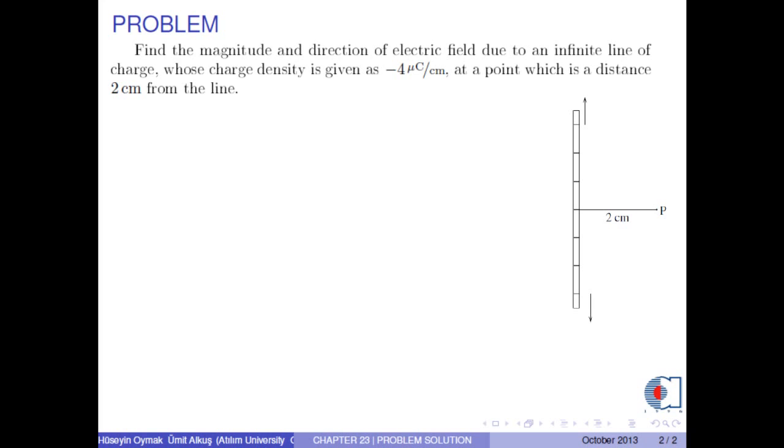Find the magnitude and direction of electric field due to an infinite line of charge whose charge density is given as negative 4 microcolons per centimeter at a point which is a distance 2 centimeters from the line.